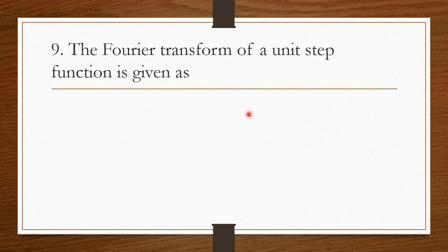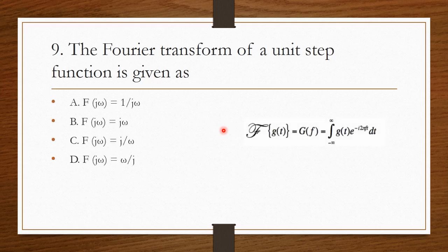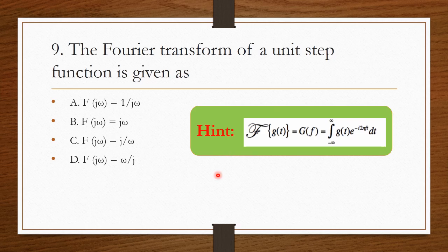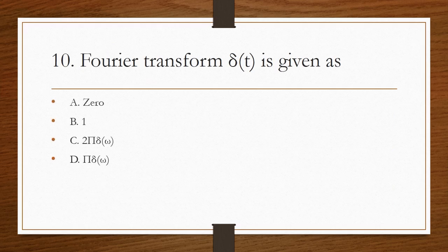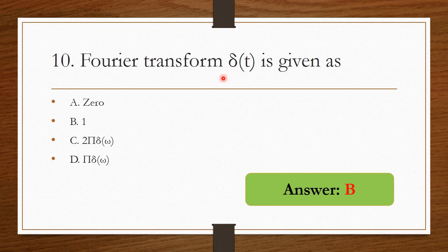The Fourier transform of a unit step function u(t) is given by F(jω) = 1/(jω), so option A is the right answer. This is the formula for calculating the Fourier transform. The Fourier transform of δ(t) — always remember, the Fourier transform of δ(t) equals 1, so option B is the right answer.